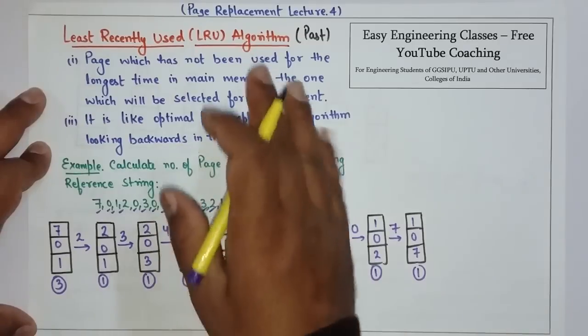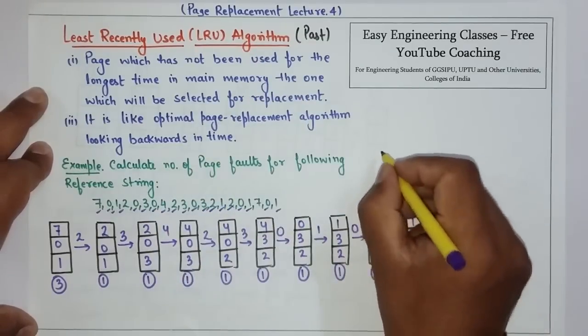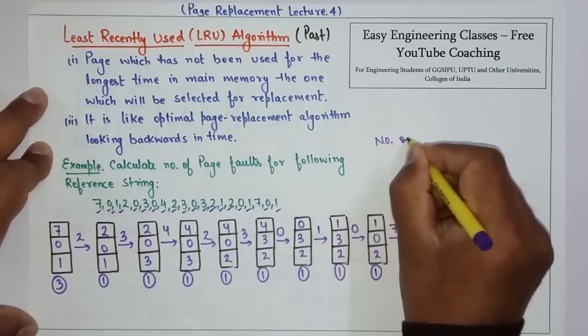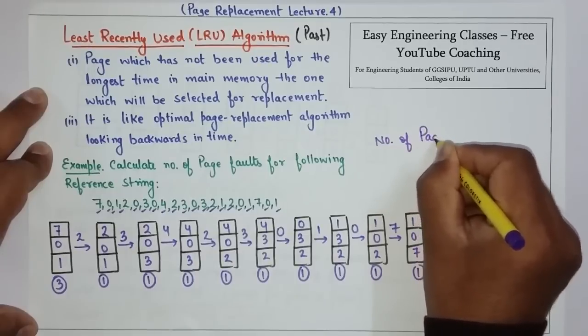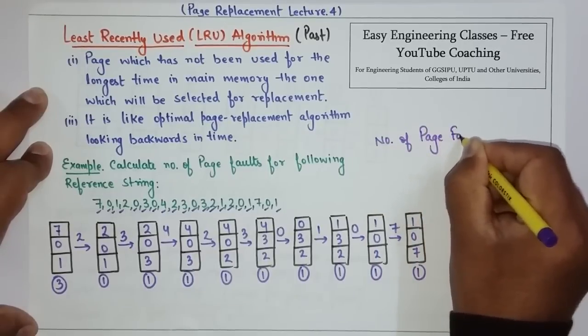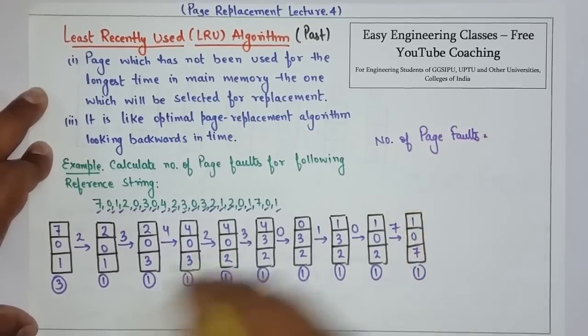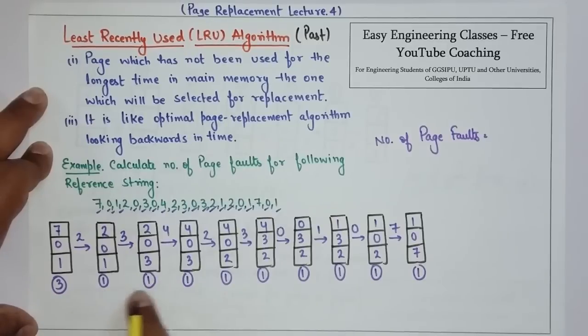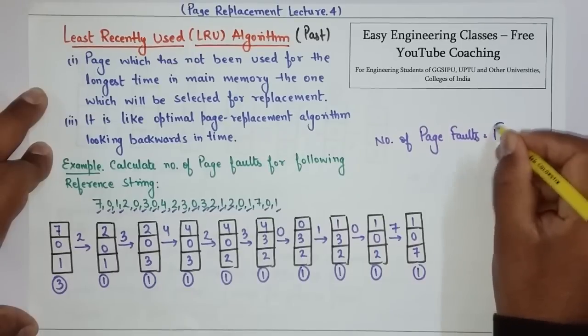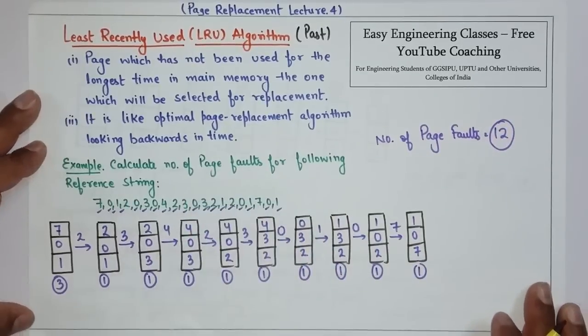So this is the complete solution using least recently used. And the number of page faults are 3 plus 1, 4, 5, 6, 7, 8, 9, 10, 11, 12. So number of page faults in this question is 12.